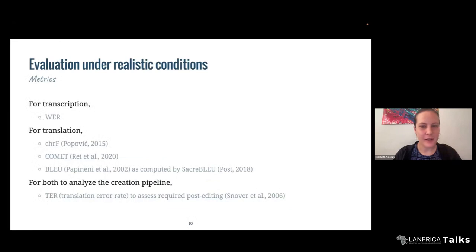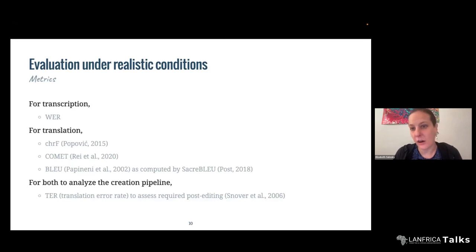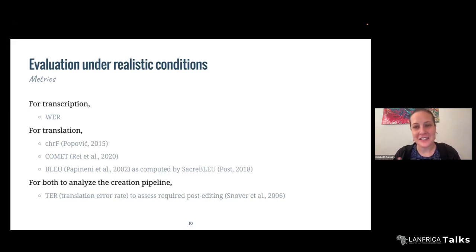For all of our metrics, when assessing both system and annotator output, we're going to use word-level error rate for transcription — always in English here. For translation, we're using a few different metrics because they tend to pick up on slightly different things about your system, so it's a good sign to have multiple when possible. We're also going to use translation error rate to assess the required post-editing, which gives an additional level of freedom to the output — for example, if something needs to be reordered, that'll be weighted differently than in word error rate.